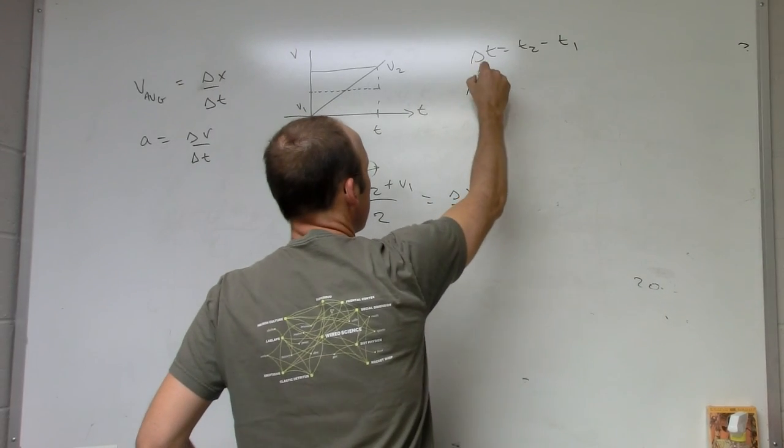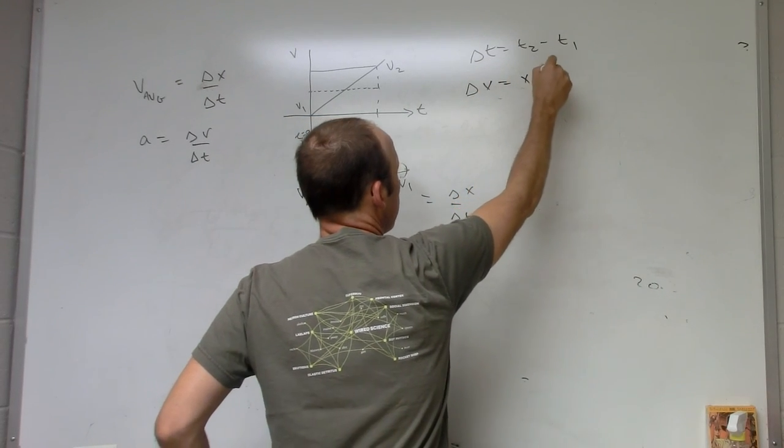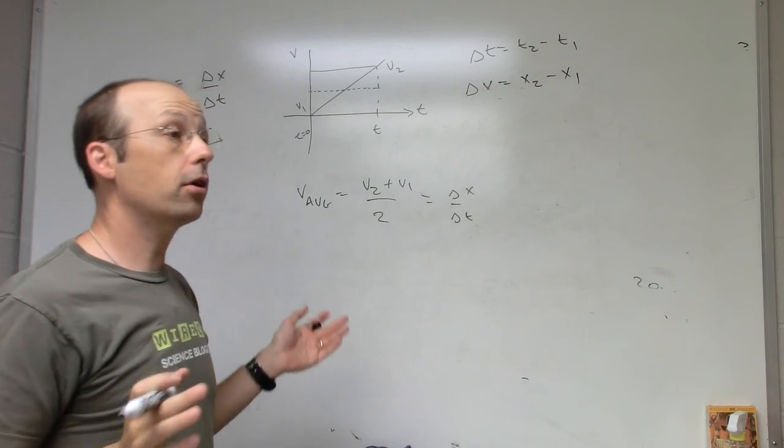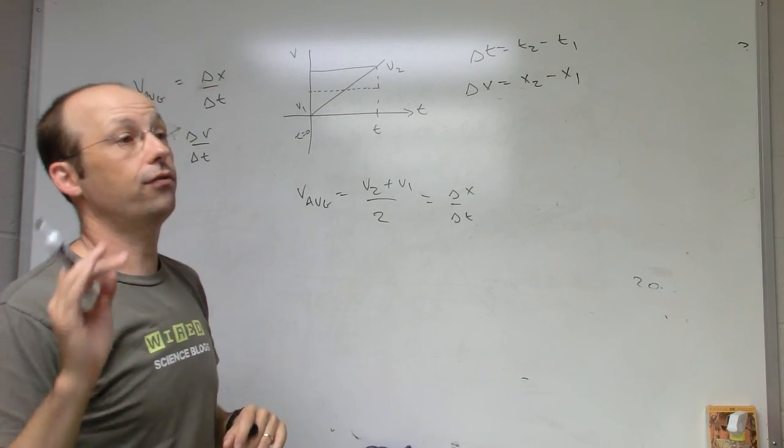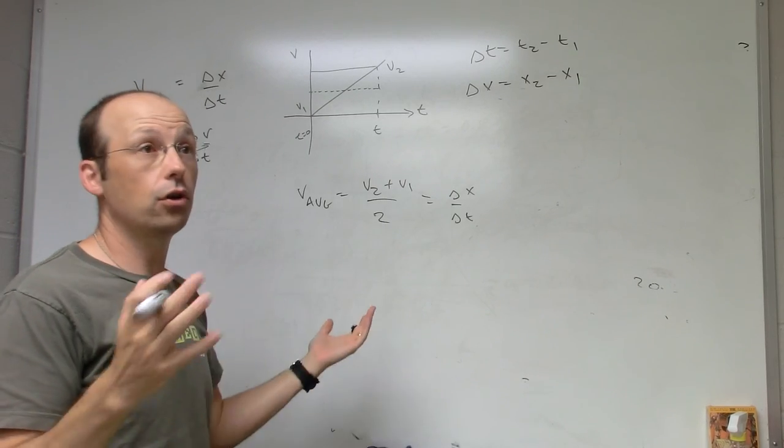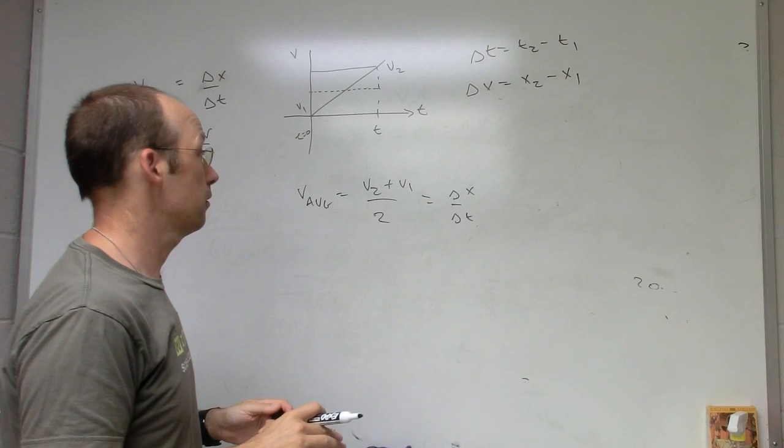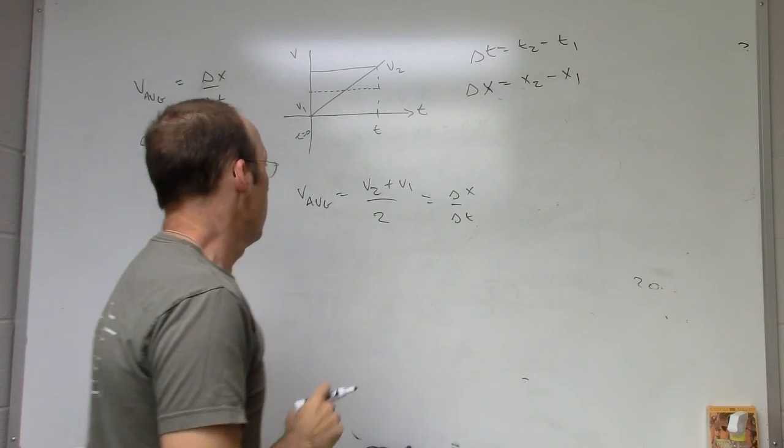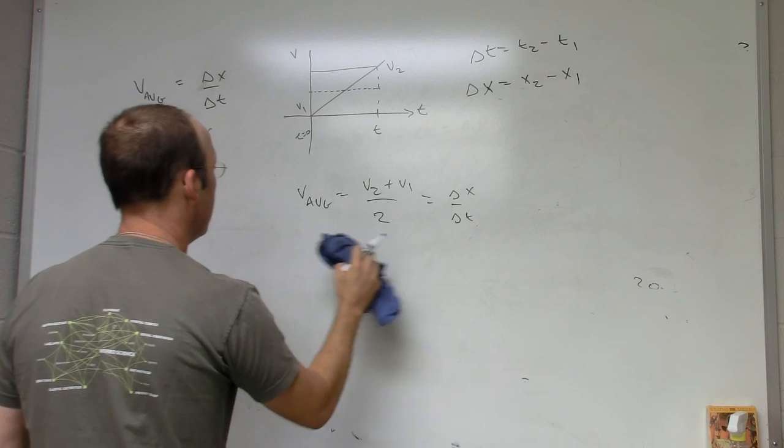I will call delta x, x2 minus x1. So it starts at x1, it ends at x2. Some books use x initial, x final. I like to call them 1 and 2. You could call them 0 and 1. You could do anything. Just be consistent. Okay, so now let me get started.